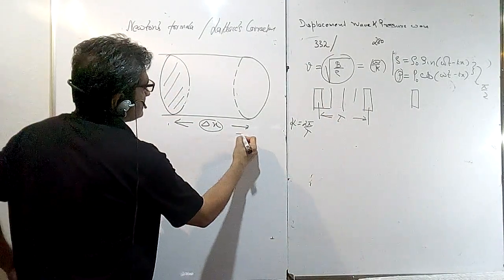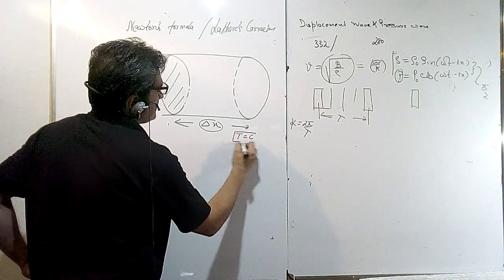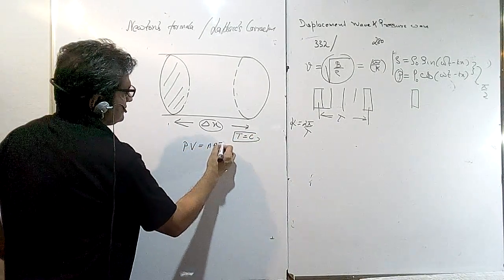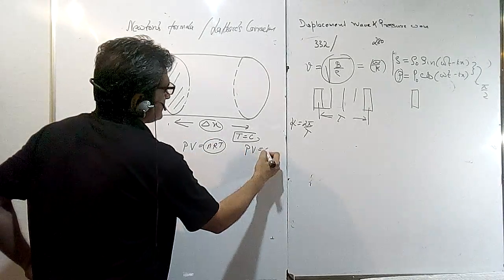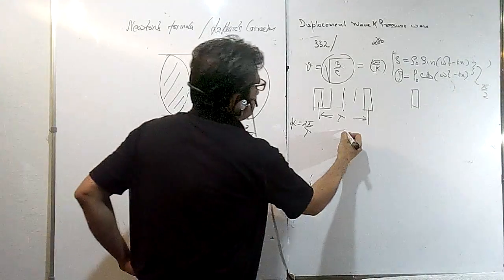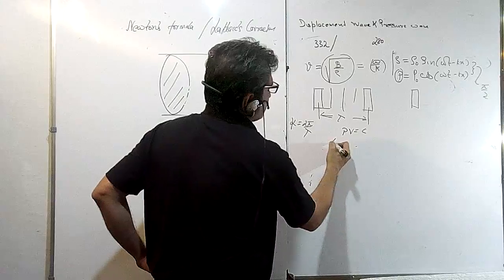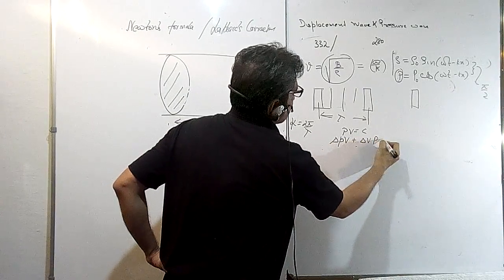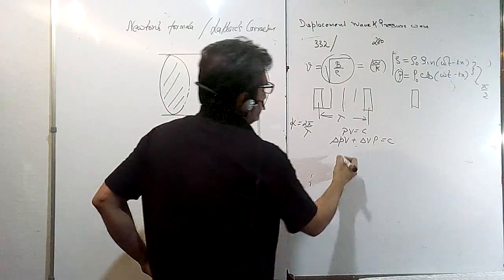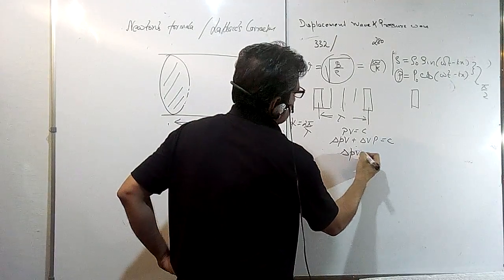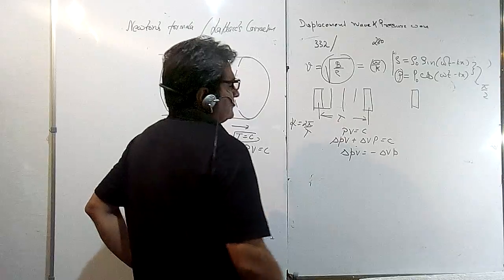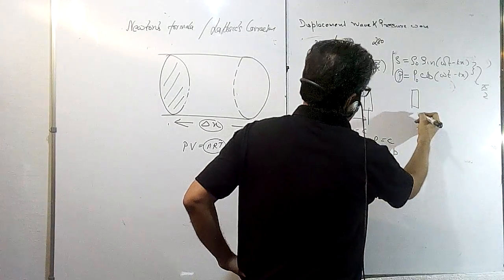So PV, we know, is nRT. So if temperature is constant, PV is constant. So if we write PV as constant, you will write ΔP·V + ΔV·P is constant, so we can write ΔP times V is equal to minus ΔV times P.